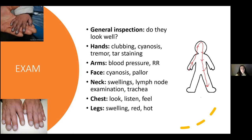Down to the neck: check for any swellings and lymph nodes — with a massive pneumonia they might have enlarged lymph nodes as a sign of infection. Check that the trachea is central. Then the chest: look, listen, feel — auscultation, percussion, expansion. That's the key examination, especially in a respiratory assessment.